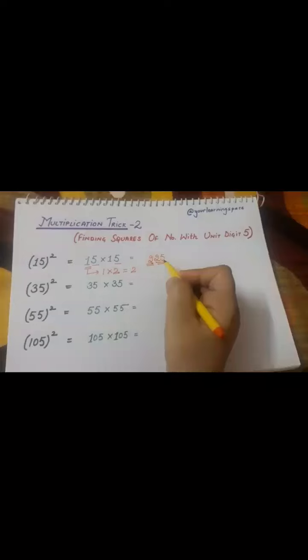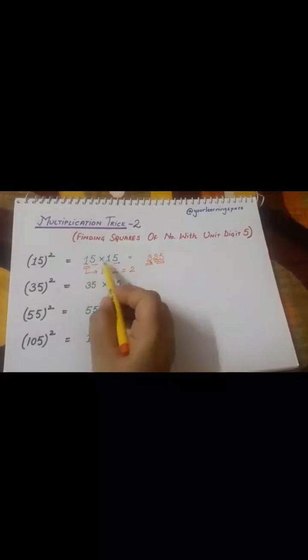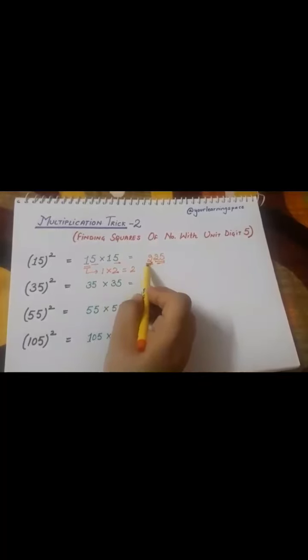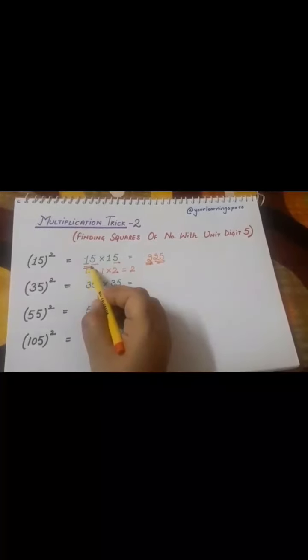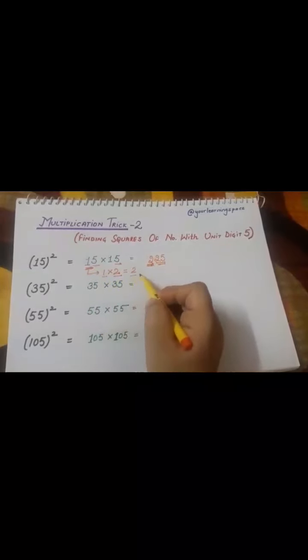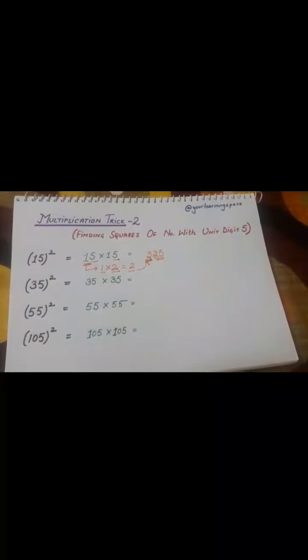One is 25, which we get from five and five, which is five into five equals 25. Then, how are we getting number two? We're getting number two from here: one, we multiplied one with its successor, and hence the answer was two. And we just kept it as the answer. Here, 15 squared is equal to 225.